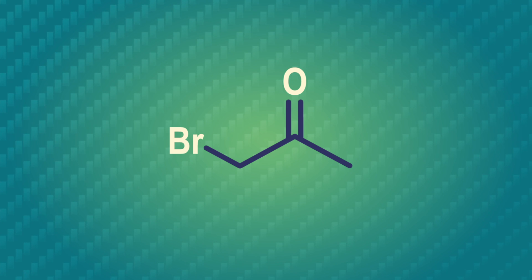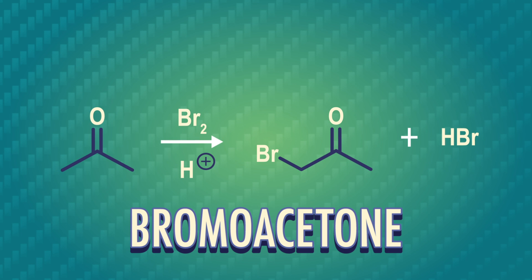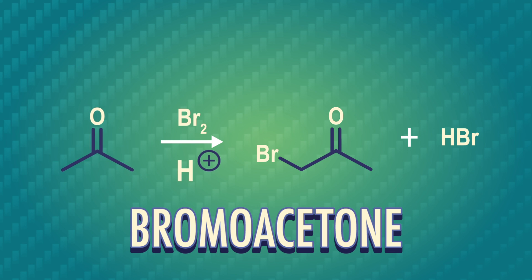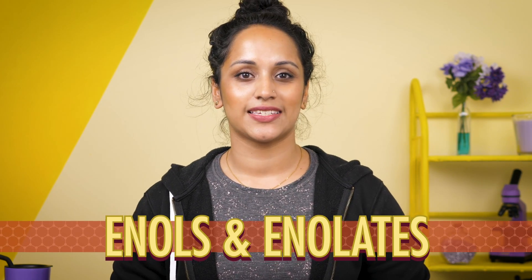One of the minor components is bromoacetone, a substance that can be made in the lab by combining bromine with acetone in the presence of an acid catalyst. This reaction works because the acetone enolizes in the presence of the acid. We're about to find out what that means as we dive into enols and enolates.